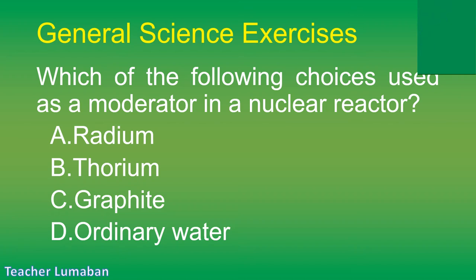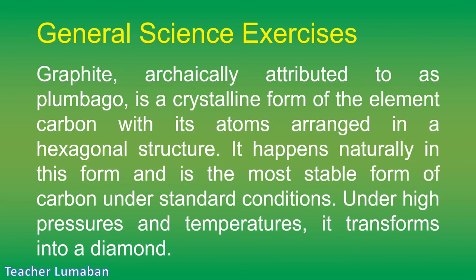The correct answer is Letter C: graphite. Graphite, archaically attributed to as plumbago, is a crystalline form of the element carbon with its atoms arranged in a hexagonal structure. It happens naturally in this form and is the most stable form of carbon under standard conditions. Under high pressures and temperatures, it transforms into a diamond.